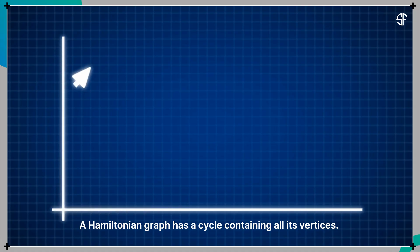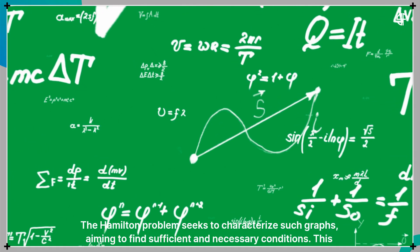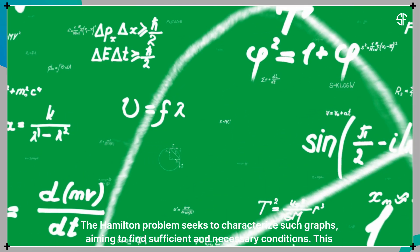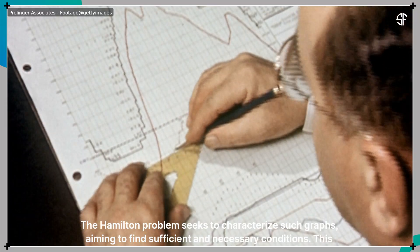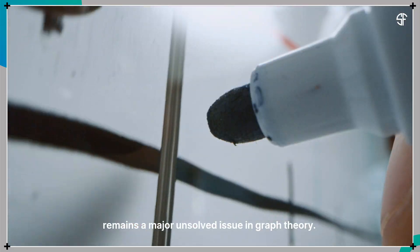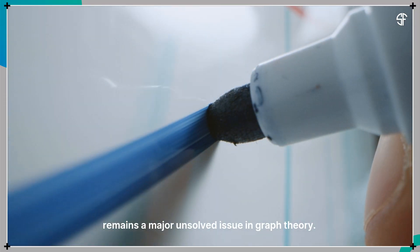A Hamiltonian graph has a cycle containing all its vertices. The Hamilton problem seeks to characterize such graphs, aiming to find sufficient and necessary conditions. This remains a major unsolved issue in graph theory.